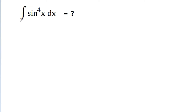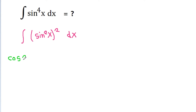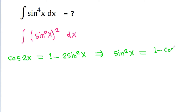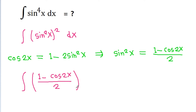In this video, we have to find the integral of sin⁴x dx. So it is the integral of sin⁴x, written as (sin²x)² dx. We know that cos 2x equals 1 minus 2 sin²x, and from this we get sin²x equals (1 minus cos 2x) / 2. So it becomes the integral of ((1 minus cos 2x) / 2)² dx.